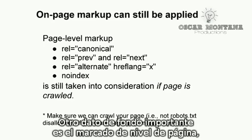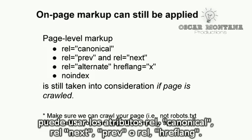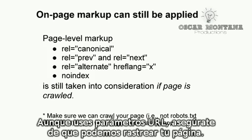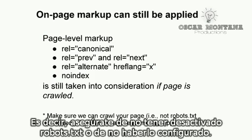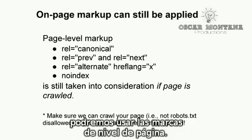Another background piece of information is that page level markup is still taken into consideration in tandem with URL parameters. So if you have page level markup like rel canonical, rel next/prev, or rel alternate hreflang, that's fine and can still be used by Google, even if you're using URL parameters. Just make sure that we can still crawl your page — meaning that it's not robots.txt disallowed or set to not be crawled in URL parameters. As long as we can crawl your page, we can still use the page level markup.